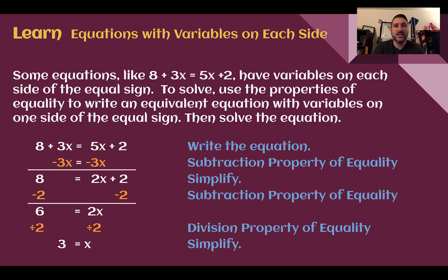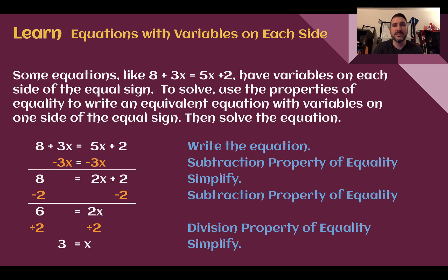Sometimes, equations like 8 plus 3x equals 5x plus 2 have variables on each side of the equal sign. To solve these types of problems, we're going to use the properties of equality to write equivalent equations with variables on only one side, and then use what we've learned in previous lessons to solve the equation.